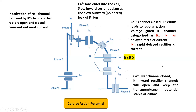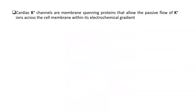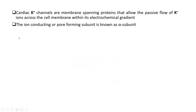In phase 4, sodium and calcium channels remain closed and the potassium inward rectifier channel opens, keeping the transmembrane potential stable at minus 90 mV. Cardiac potassium channels are membrane-spanning proteins that allow the passive flow of potassium ions across the cell membrane within its electrochemical gradient. The ion-conducting or pore-forming subunit is known as the alpha subunit.